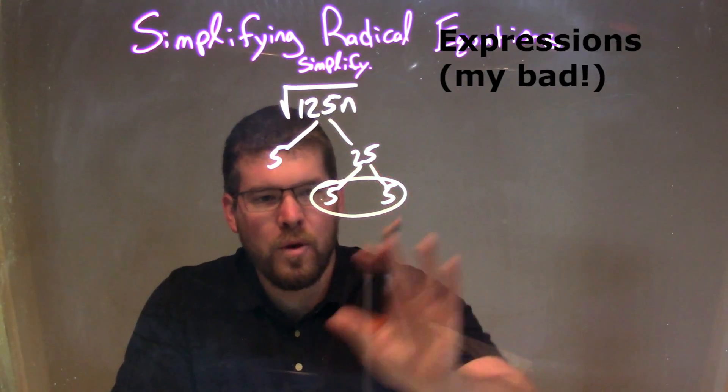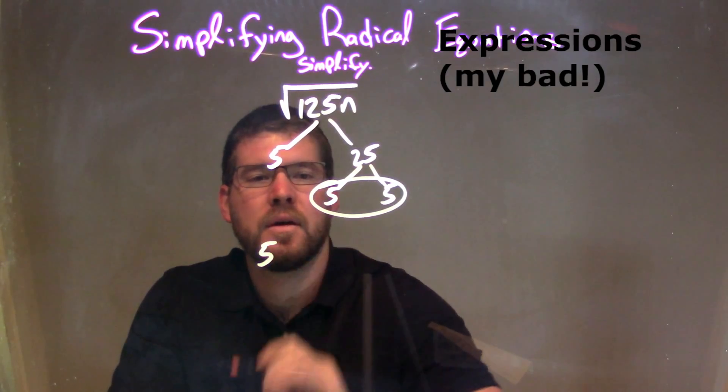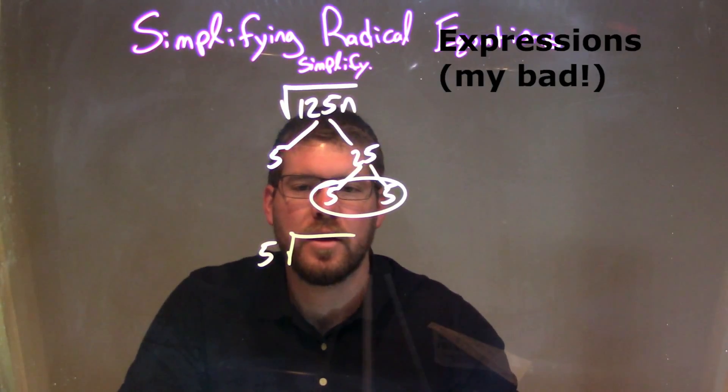So the way I think about it, when I bring it to the outside, if I have a pair, I can bring it to the outside. So I bring one 5 to the outside of my radical, my root.